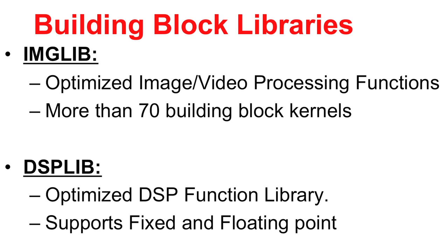Two key libraries in this category are the DSPlib and the Imagelib. The DSPlib includes optimized functions that serve as building blocks for various signal processing applications, with both fixed-point and floating-point implementations of these kernels. Imagelib is a collection of more than 70 building block kernels that can be used for image and video processing applications.